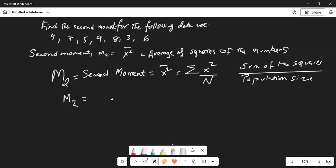Is equal to sum of the squares. So, it will be like 4 square plus 7 square plus 5 square plus 9 square plus 8 square plus 3 square plus 6 square divided by population size, which is 7.